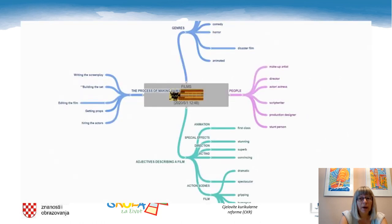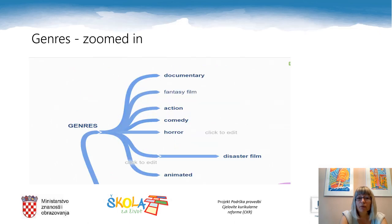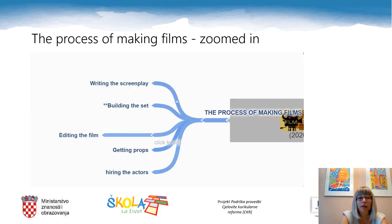Your digital mind map might look like this one. To see the words brainstormed better, let's zoom in. As for genres, there are documentary, fantasy film, action, comedy, horror, disaster film and animated film. The process of making films includes writing the screenplay, building the set, editing the film, getting props and hiring the actors.